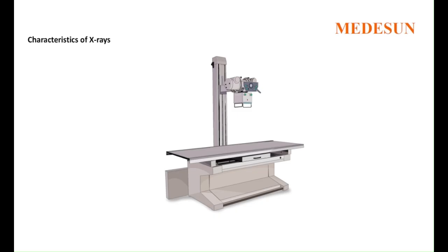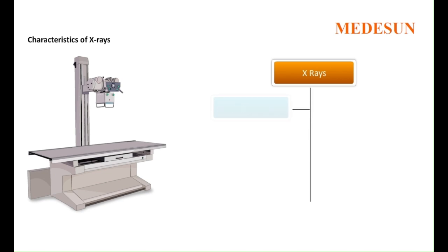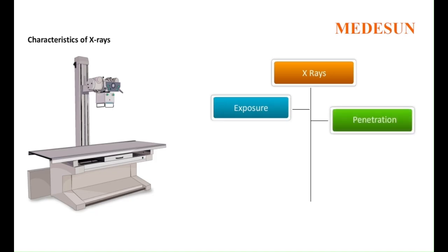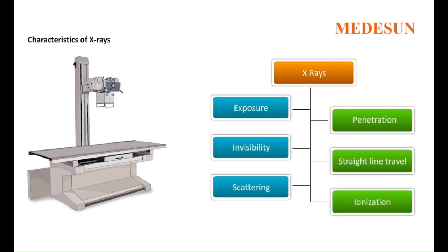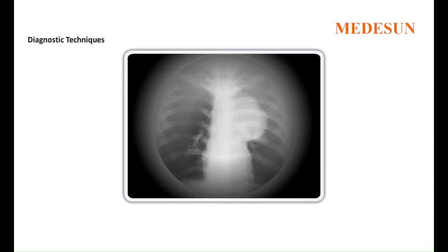Characteristics of X-rays: Some main characteristics of X-rays are: 1. They cause exposure of a photographic plate. 2. They penetrate different substances to varying degrees. 3. They are invisible and are not detected by sight, sound or touch. 4. They travel in straight lines. 5. They can scatter radiation, which occurs when X-rays come in contact with any material. 6. Ionization — X-rays have the ability to ionize substances through which they pass.